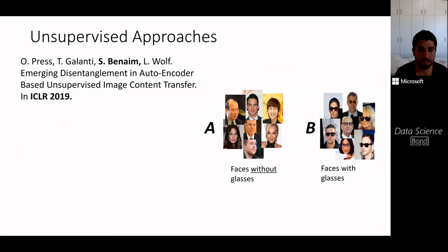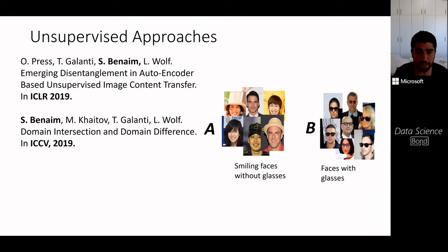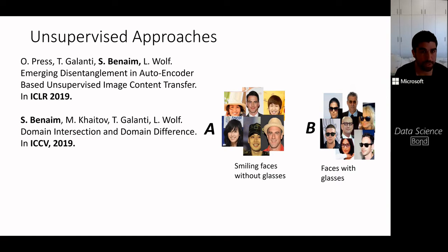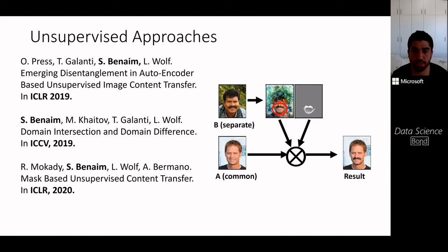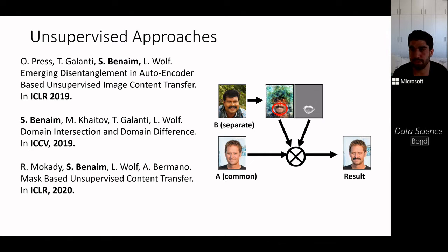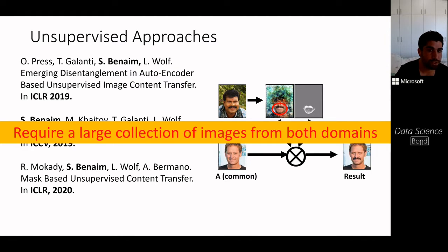We investigated this setting in a number of works. The first work considered the basic setting just described. In the second, we extended it to the case where both groups contain separate properties, such as a smile or glasses. The third work improved generation quality by generating a mask and only locally changing the region of interest. However, all of these approaches require a large collection of images from both domains.